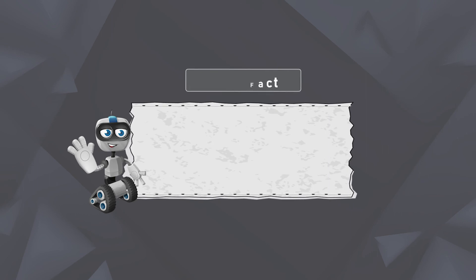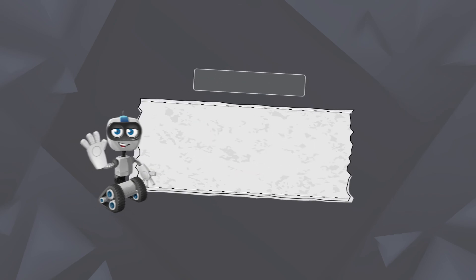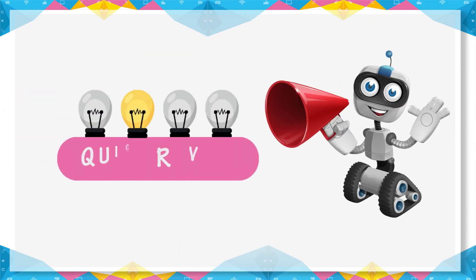Robo Fact: A computer does not understand any other language. It only understands binary language, that is 0 and 1, which are called bits. Quick review: